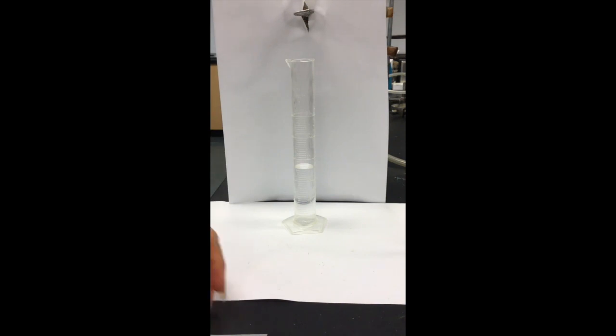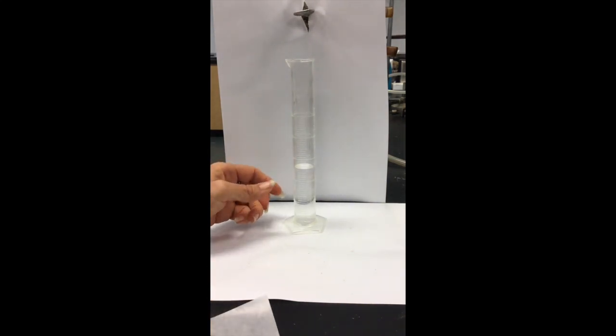Next I want to get the volume of my rocks that I measured the mass of. In order to do that, I'm going to take a 50 ml graduated cylinder and add deionized water to about 25 ml.